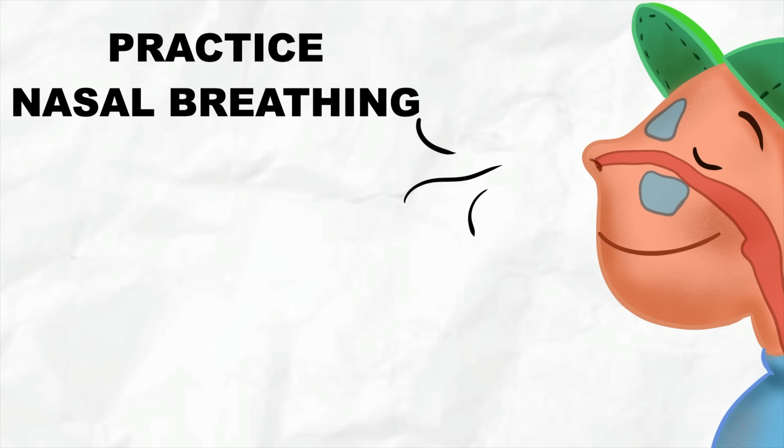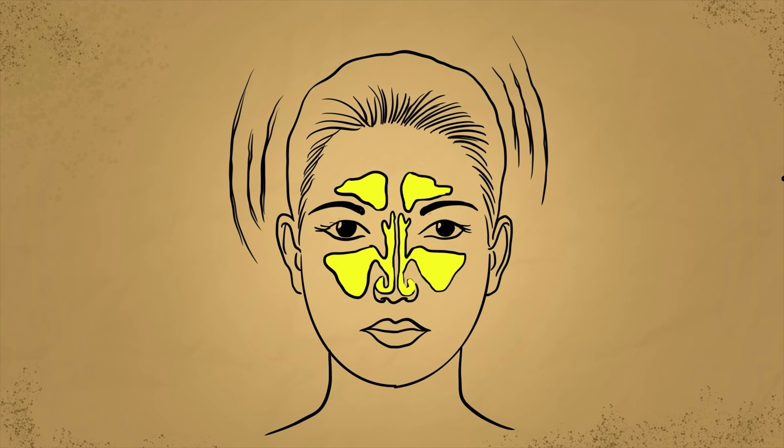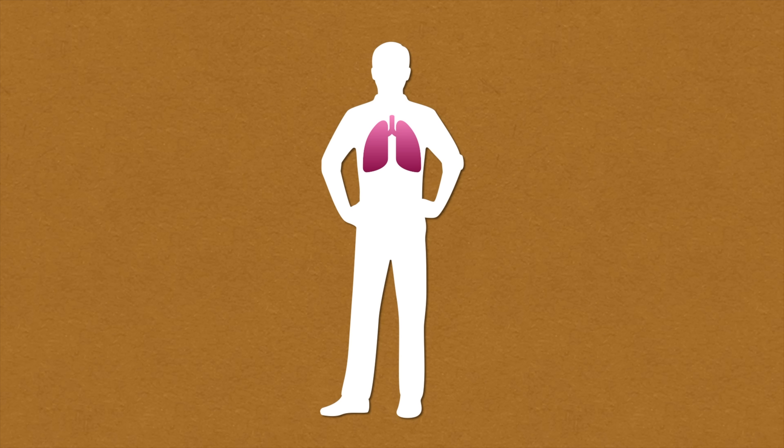First thing you should do is practice nasal breathing. Nitric oxide is produced in paranasal sinuses and is excreted continuously into the nasal airways of humans. When we breathe through our nose, this nitric oxide reaches the lung and circulates all over the body.